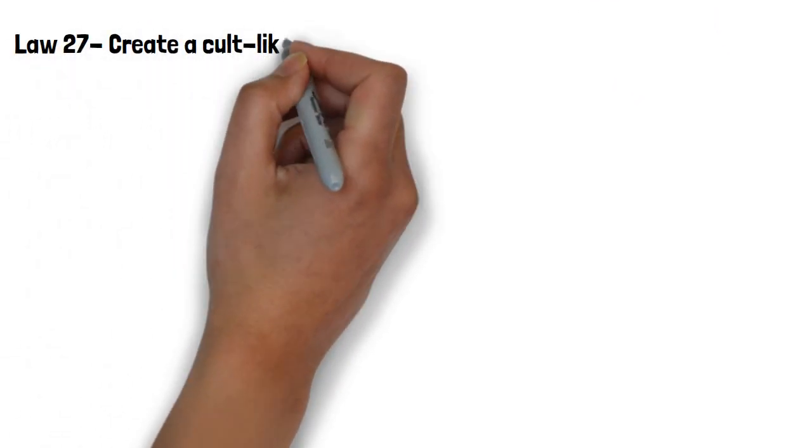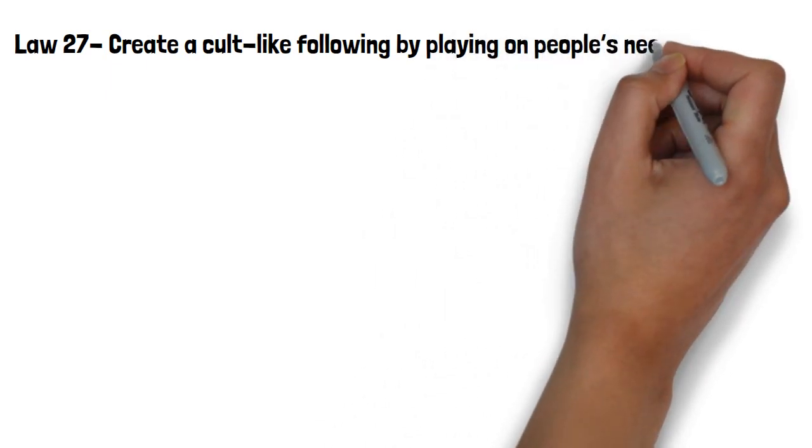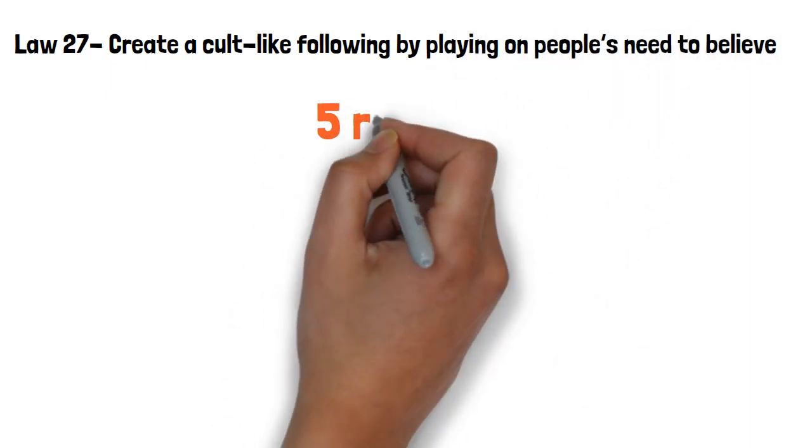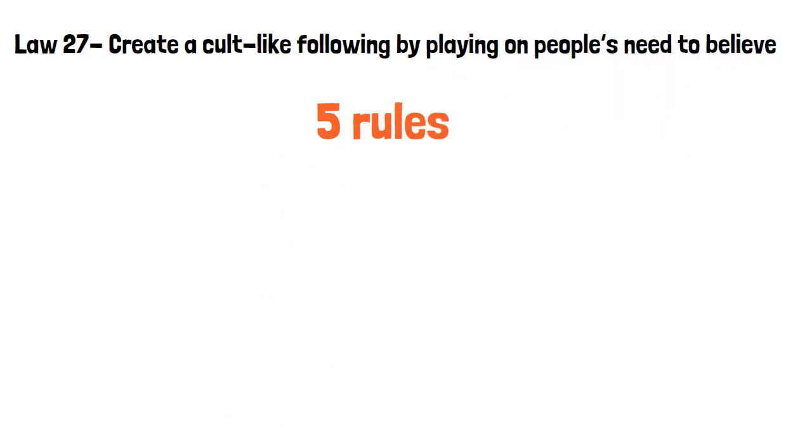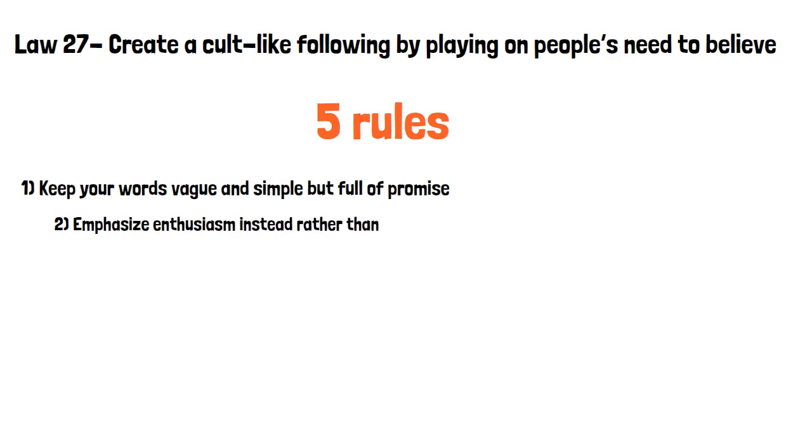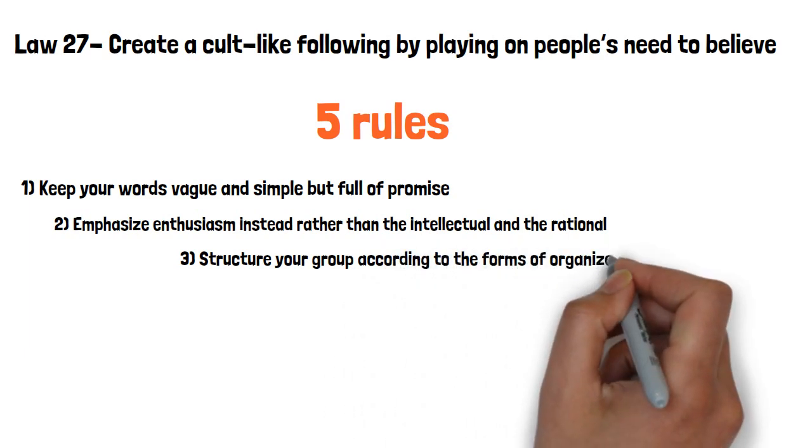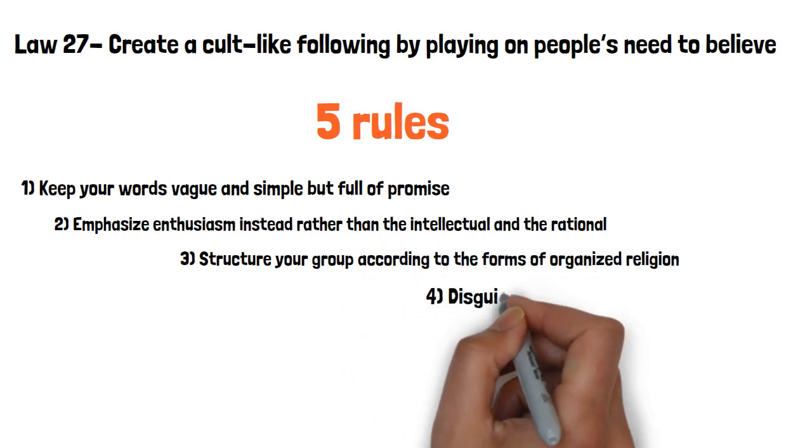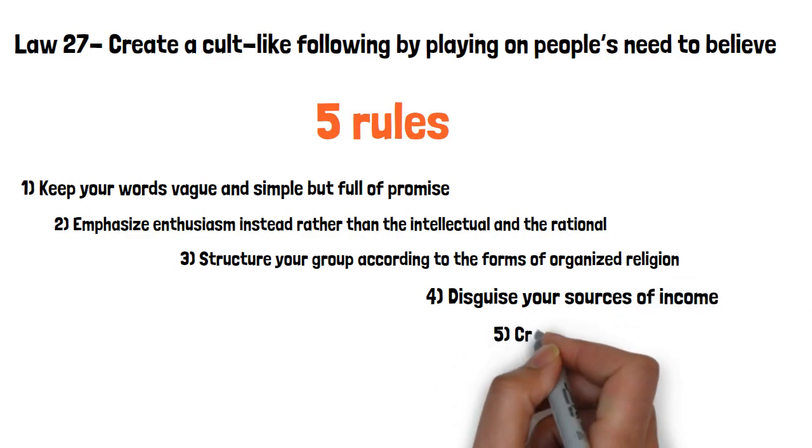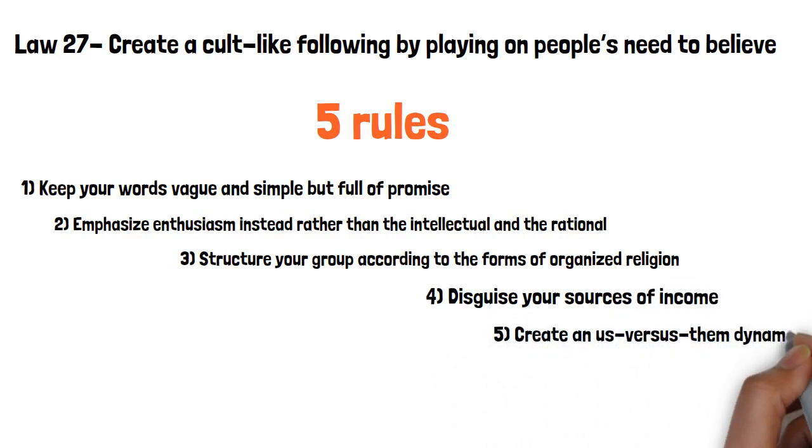Law 27, create a cult-like following by playing on people's need to believe. There are five rules of cult-making. 1. Keep your words vague and simple but full of promise. 2. Emphasize enthusiasm instead, rather than the intellectual and the rational. 3. Structure your group according to the forms of organized religion. 4. Disguise your sources of income. 5. Create an us-versus-them dynamic.